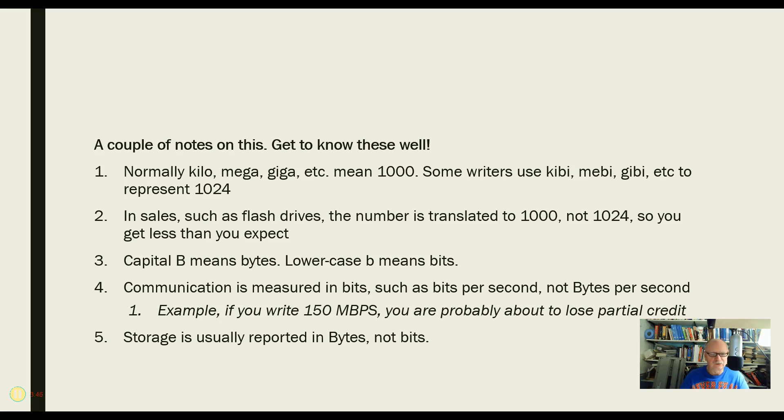So when we're communicating, you might talk about, say, from Comcast, you're getting 150 megabits per second. And if you were to write on an assignment 150 megabytes per second, with a capital B, you're probably about to lose some credit there. Because you're not getting 150 megabytes. That would be crazy amounts. That would be far faster than anybody else can even imagine getting. It's bits. Storage, however, is reported in bytes, not bits.